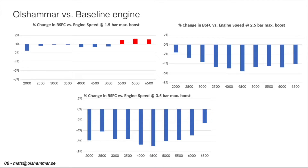After the software had determined all the optimized parameters for the baseline engine and the Olsammar engine we got these comparisons. We see that for 1.5 bar absolute boost, which is half a bar of over-boost, there is little gain with the Olsammar engine. But with 2.5 bar absolute boost, which is 1.5 bar over-boost, we have a substantial savings — more than 5% at 4,500 RPM. And with 3.5 bar absolute boost, 2.5 bar over-boost, we get almost 6% on average for most RPM in fuel savings.